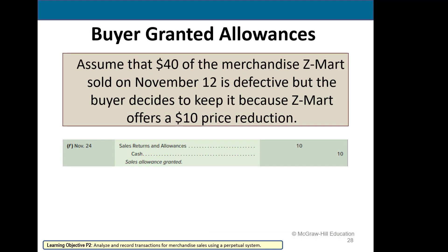If we grant an allowance to a customer for defective merchandise that they're going to keep and not return to us, we will debit sales returns and allowances and credit cash.